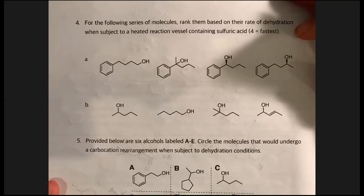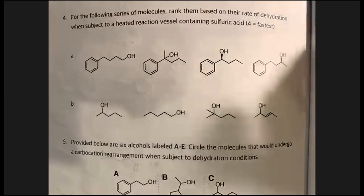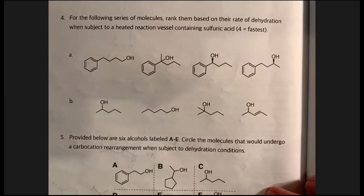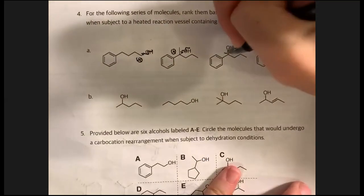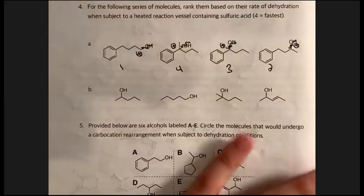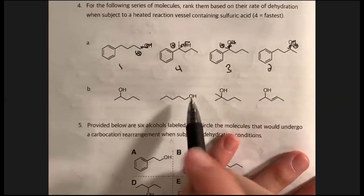For ranking problems: dehydration goes through a carbocation intermediate, so rank by carbocation stability. The most stable intermediate reacts fastest. For letter B, you can see resonance at play — tertiary, secondary, primary rankings. For letter 5: identify which alcohols undergo rearrangement when subjected to dehydration conditions. Look for cases where a hydride shift, alkyl shift, or ring expansion would increase carbocation stability.